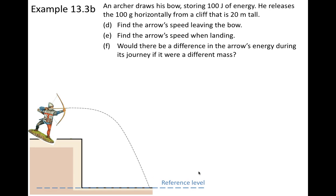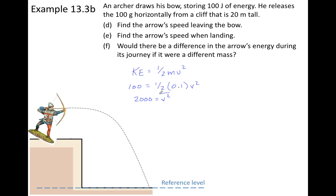In part D, we want to find the arrow's speed when it leaves the bow. We use the kinetic energy and speed relationship. The kinetic energy when the arrow left the bow was 100 joules, and the mass is 0.1 kilograms. Solving for speed: simplifying gives speed² = 2000, and taking the square root gives a speed of 44.7 meters per second.